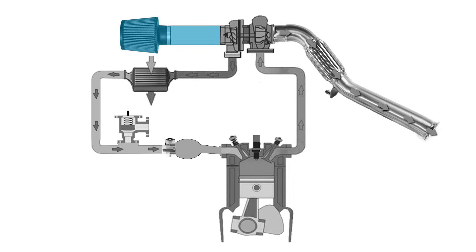What happens is your air comes into the vehicle through the intake or the air filter, then goes into the turbo. It's compressed from there and forced into the charge pipes. That pipe then goes to the intercooler where the air is cooled down and run through another charge pipe to the throttle body.